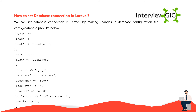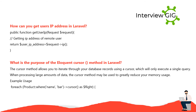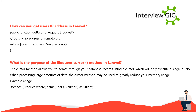How to set a database connection in Laravel? We can set a database connection in Laravel by making changes in the database configuration file config/database.php. How can you get a user's IP address in Laravel? public function getUserIP(Request $request) { return $userIPAddress = $request->ip(); } What is the purpose of the Eloquent cursor method? The cursor method allows you to iterate through your database records using a cursor, which will only execute a single query. When processing large amounts of data, the cursor method may be used to greatly reduce memory usage.